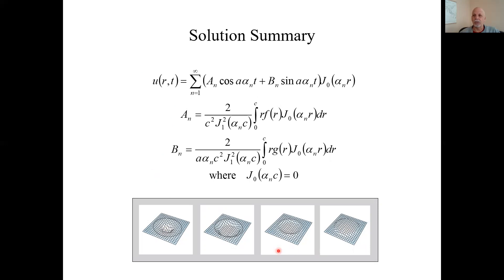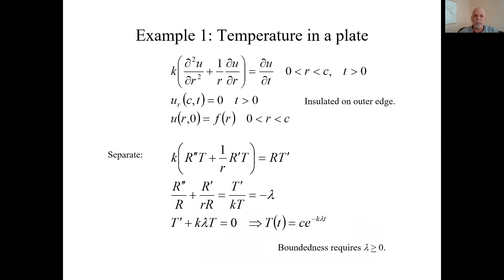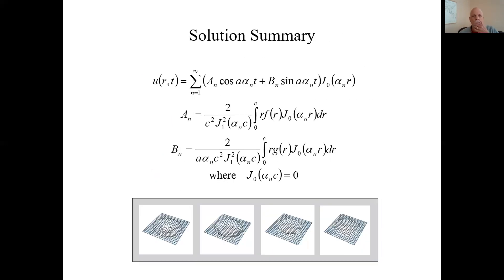Anyway, here's visualizations of what that vibrating membrane looks like over different slices of time. We'll do more examples and I'll come back to this example and explain why we could reject negative lambdas and lambda equals zero. I'll cover that later.